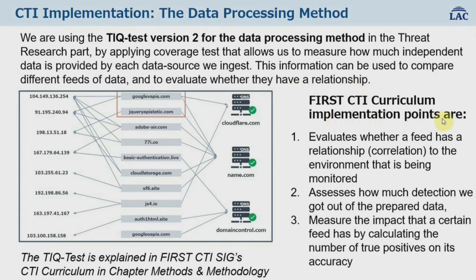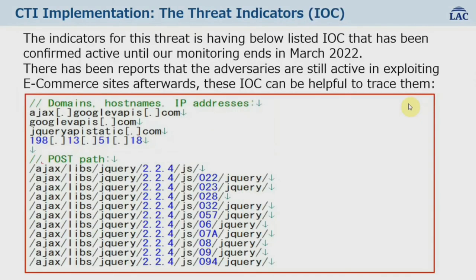For the implementation: first, evaluate whether a feed has a relationship to the environment being monitored; then assess how much detection we get out of the prepared data we collected; then measure the impact of a certain feed by calculating the number of true positives and its accuracy. By applying data processing and having our trusted source and information levels, we created threat indicators or IOCs. It has been reported that the adversaries are still active in exploiting e-commerce sites, so we hope the IOCs can be helpful to trace them further.